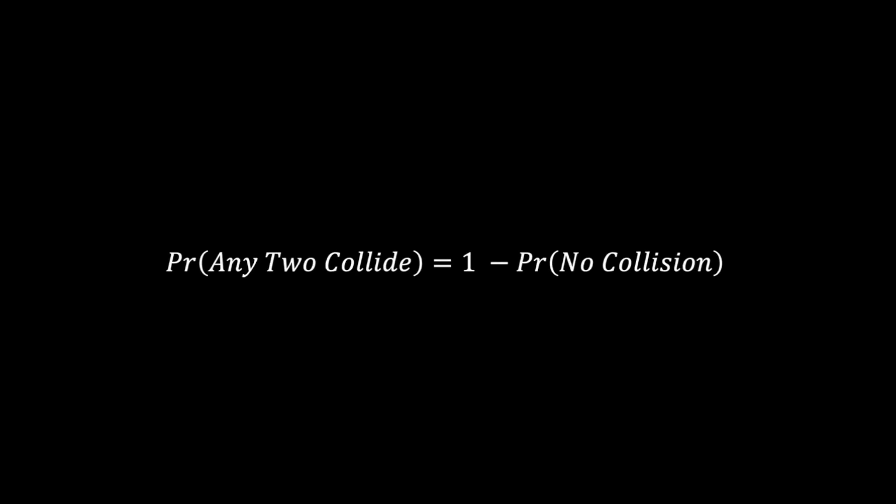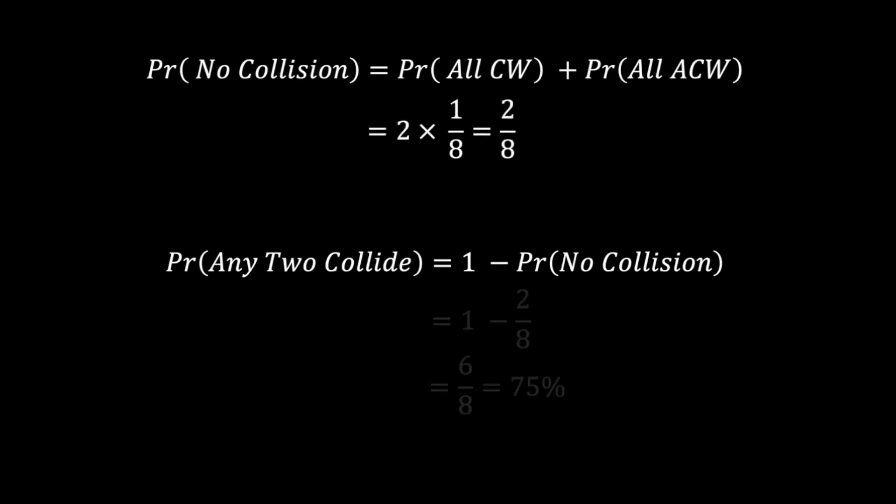Hence, the probability of any two ants colliding is simply 1 minus the probability of having no collision. Since the probability of each setup is equal, the result is 6 over 8, or 75%.